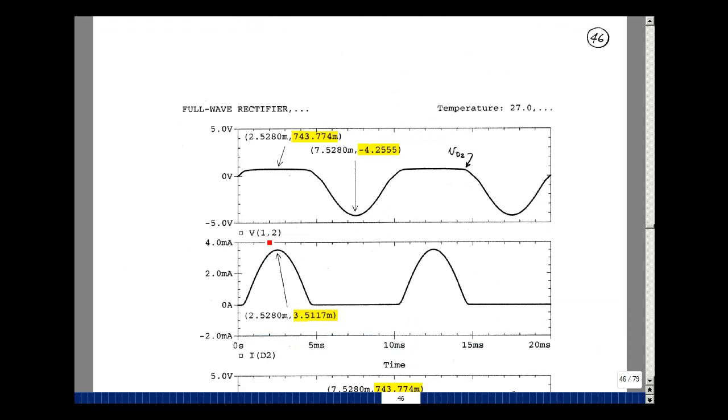Plot here the voltage from one to two, and this is node voltage one minus node voltage two, which is the voltage across diode two. You can see here it gets forward biased, and then it gets shut off. You can see the forward bias thing here is 0.74377. Very close that we hand calculated in the last page. Here we see our minus five volts plus one diode drop, about minus 4.2555.